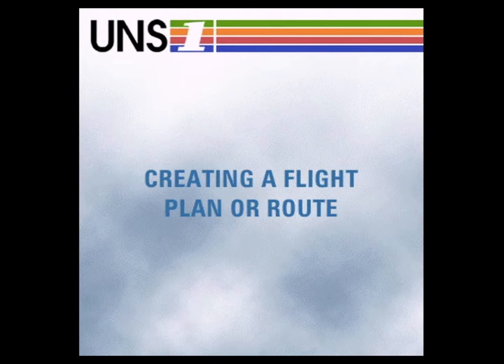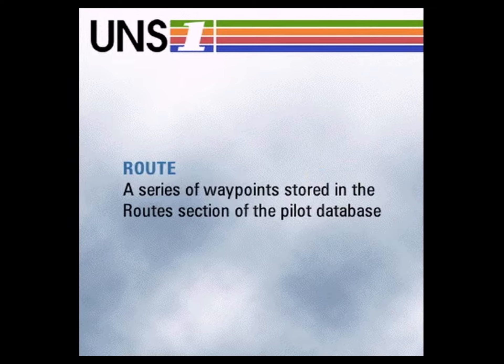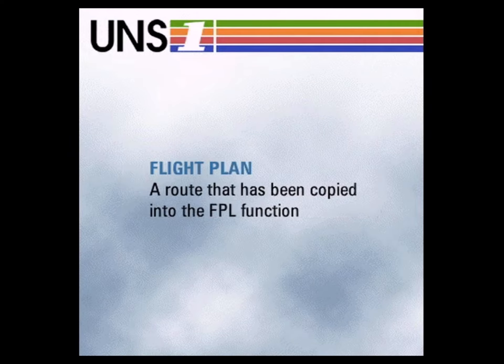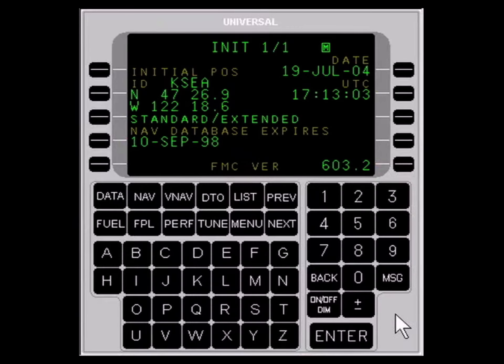Routes and flight plans are similar. A route is a series of waypoints stored in the Routes section of the pilot database. When a route is copied into the FPL or flight plan function, it becomes a flight plan. Flight plans and routes are created in the same manner, except that flight plans are created under the FPL key and is the waypoint routing the aircraft will actually fly, while routes are created under the DATA key for long-term storage.